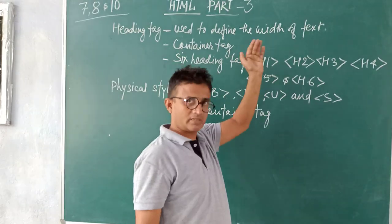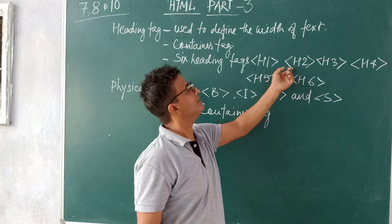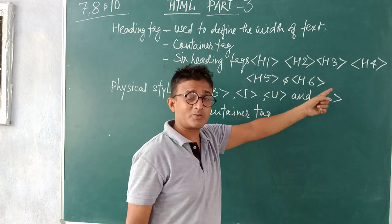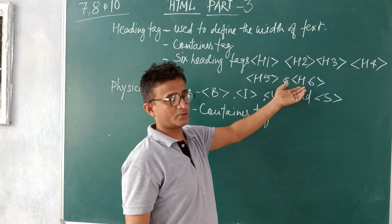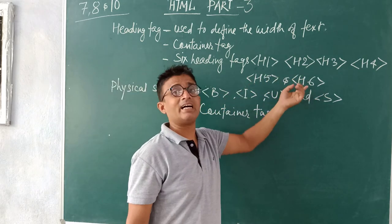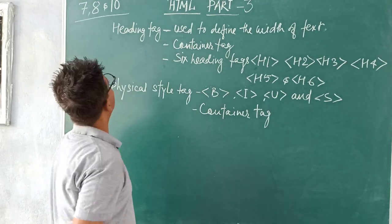And H2 a little smaller than H1. A text will appear a little smaller than H3, a little smaller than H4 will appear, a little smaller than H5, a little smaller than H6. H6 is the last for this heading tag.